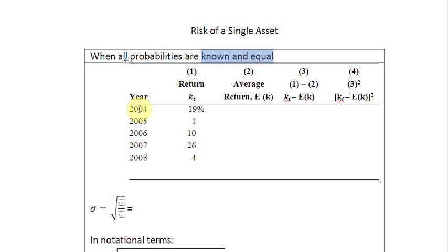We have been presented with some data here from 2004 to 2008. The data is about the return that a particular asset or stock is earning over this time period. 19% in 2004, 1% here, 10% here, 26% here, and 4% here.